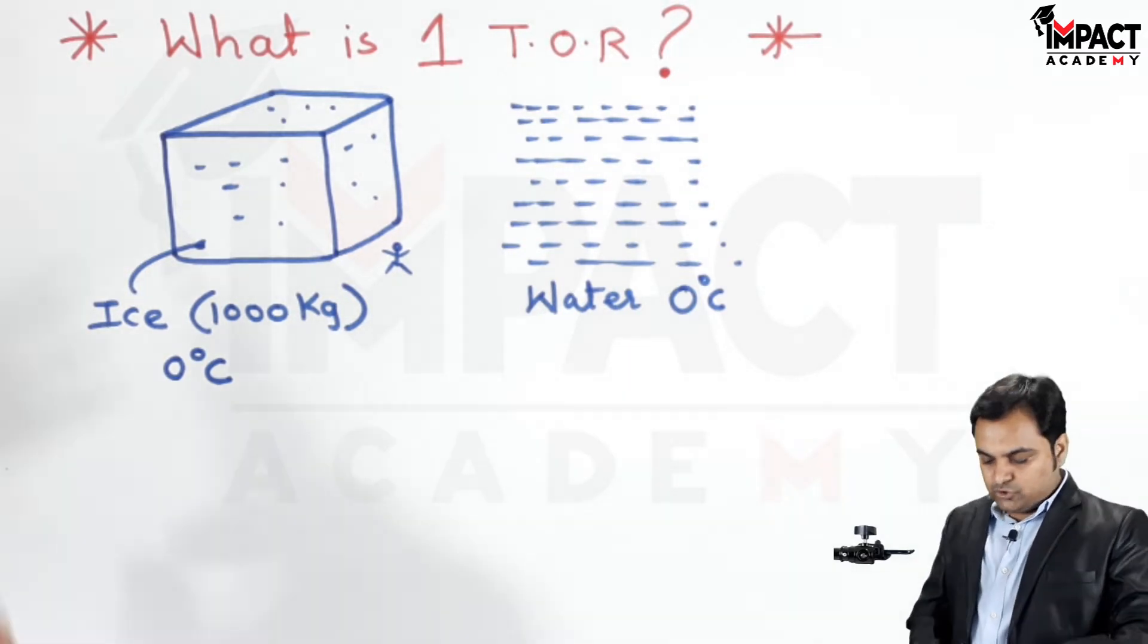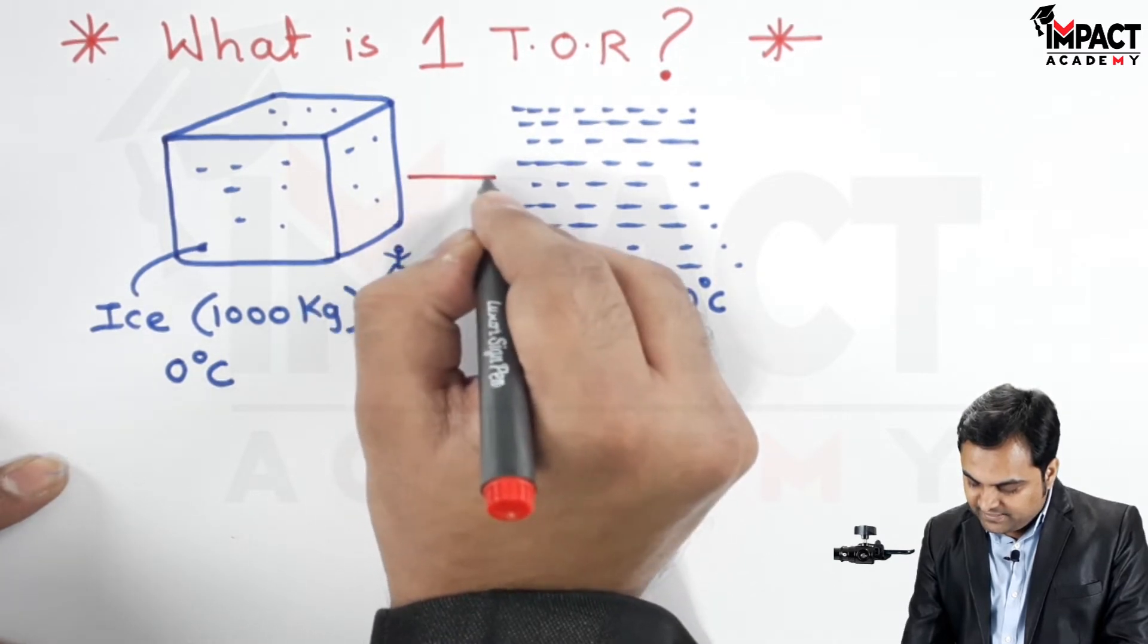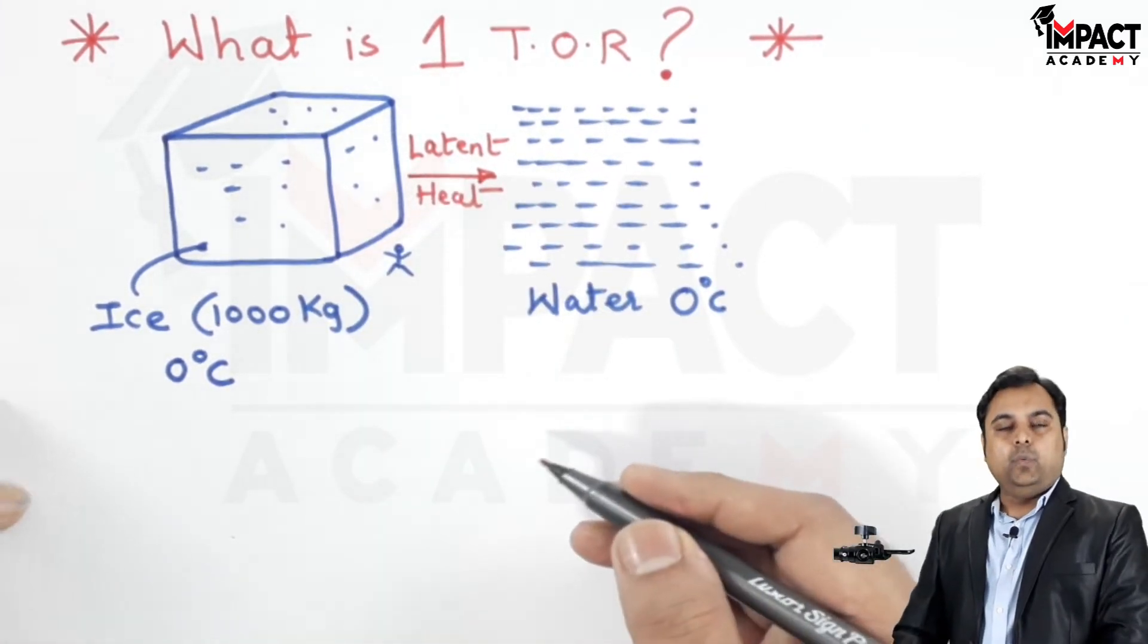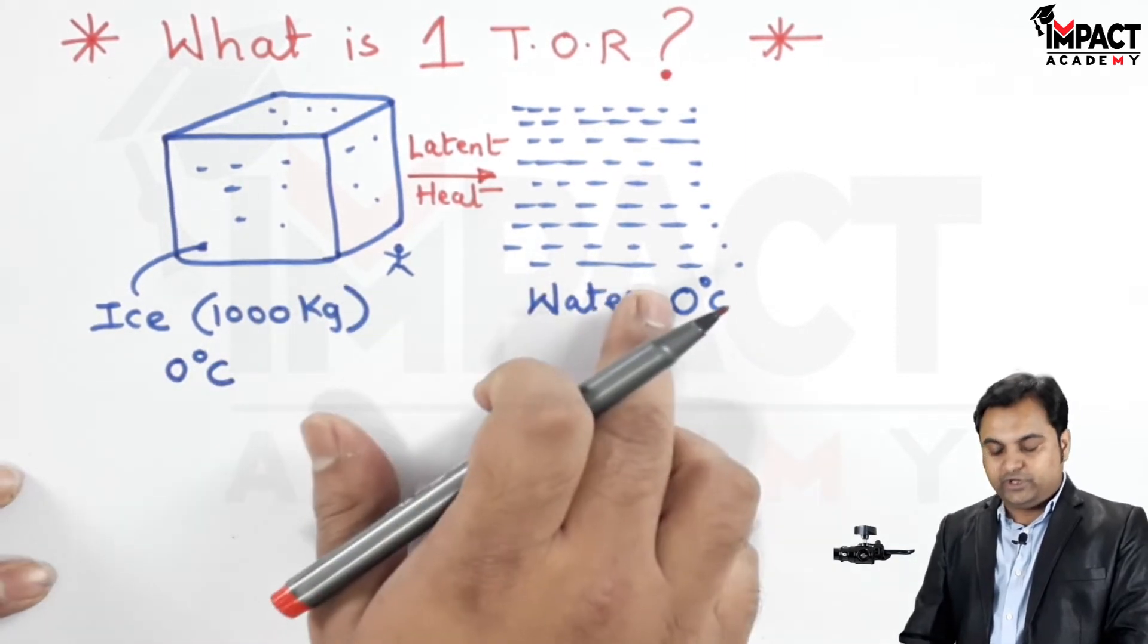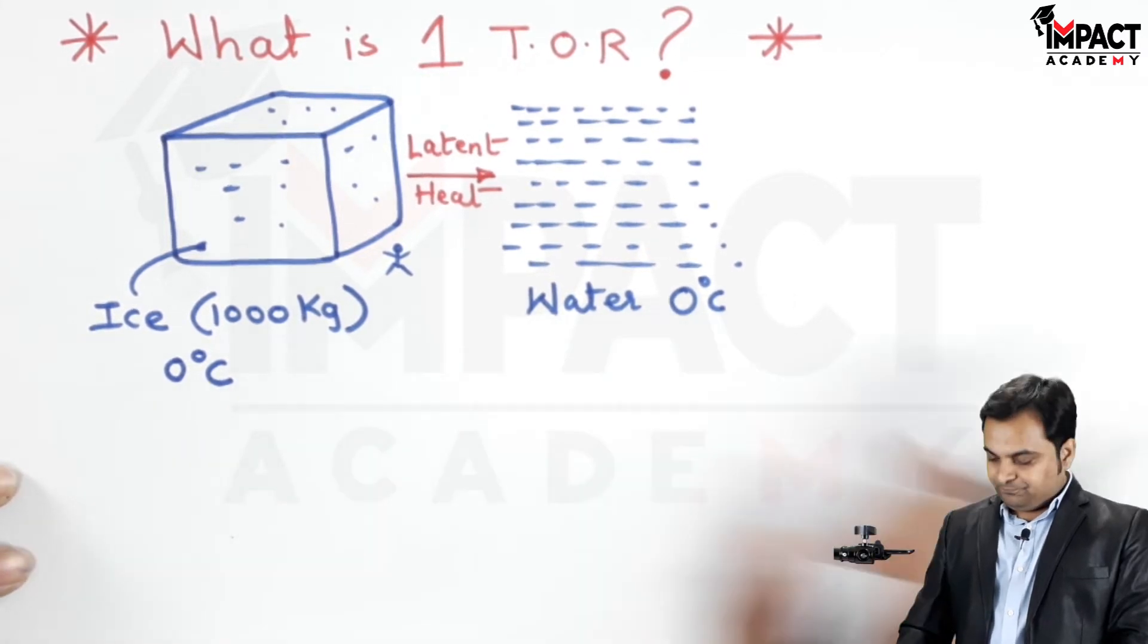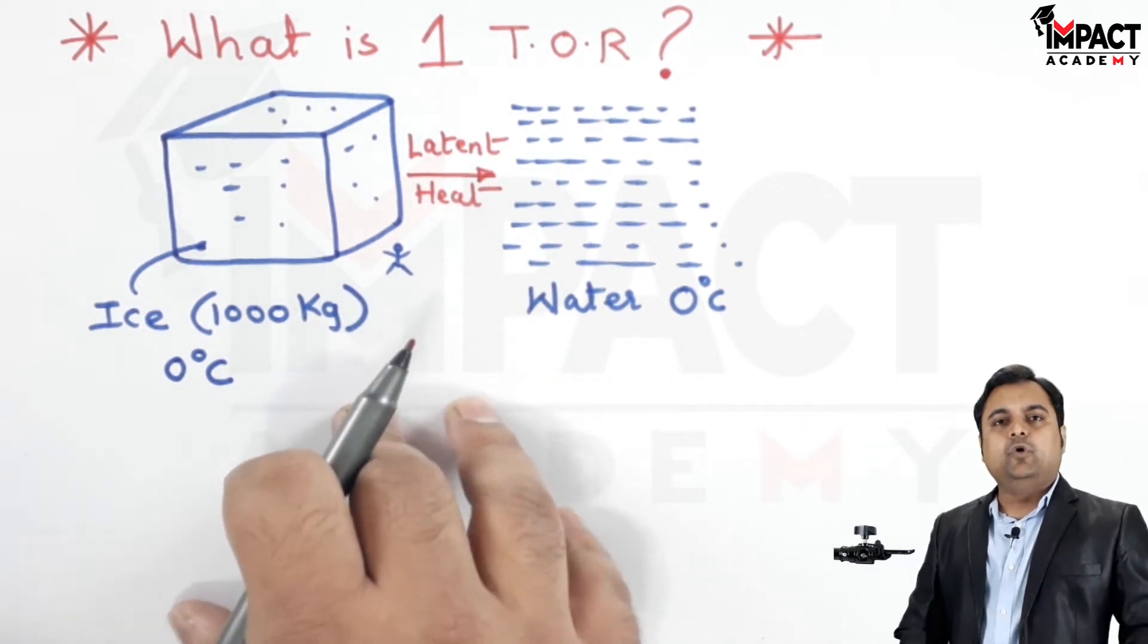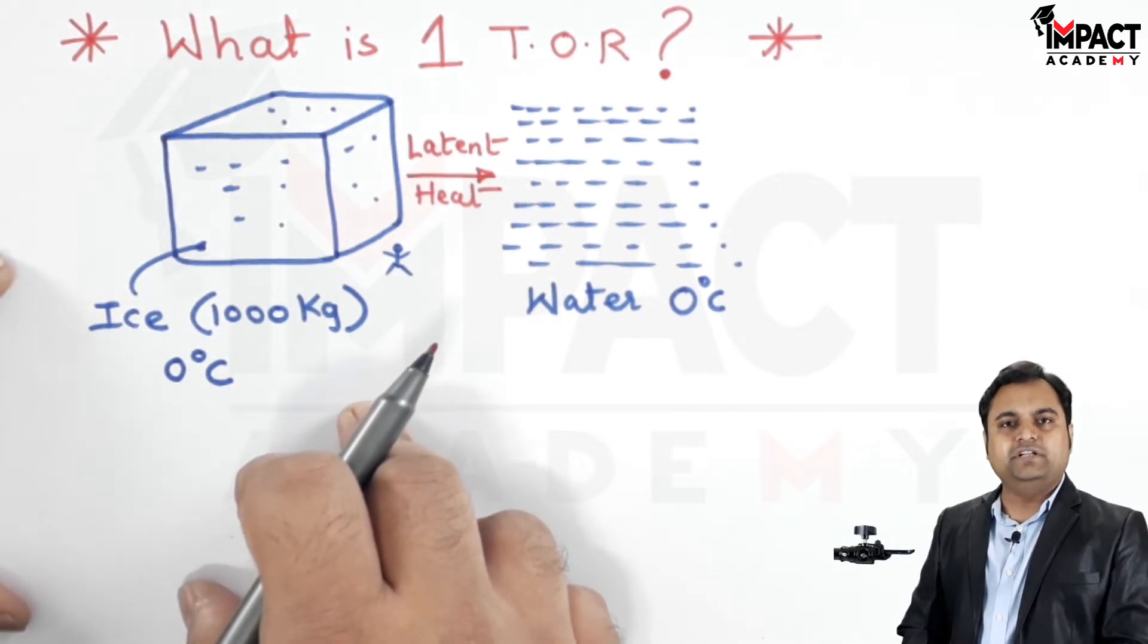So the heat which is given up by the ice is called as latent heat, wherein there is change of phase that is from solid to liquid but there is no change in temperature. The temperature is same. So when we are standing there near this ice, whatever the refrigeration effect or the cooling effect which we are feeling for the 24 hours, that would be called as the one ton of refrigeration.